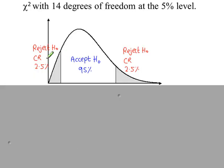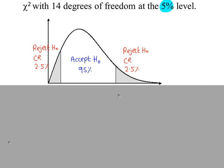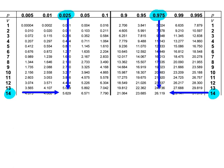We have 2.5% in the lower tail and 2.5% in the upper tail — that's the 5% split — with 95% in the centre. To get the two critical values: for the lower one, we look up 2.5% from the tables. For the upper one, the cumulative probability to the left is 97.5%. So from the tables we have the lower critical value and the upper critical value.